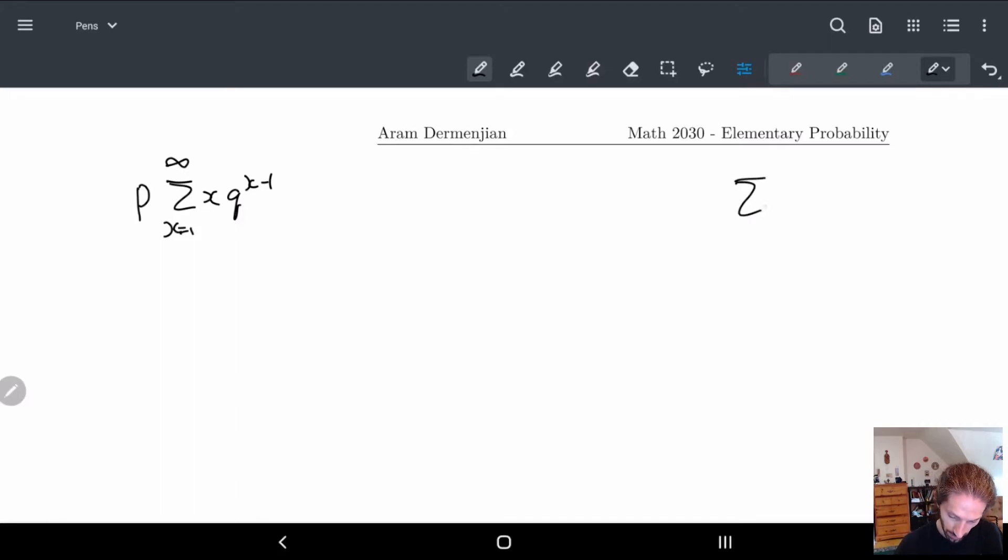We had that sum from i equals 1 to infinity of Q to the i minus 1, this remember is equal to 1 over 1 minus Q. This was just the geometric series.